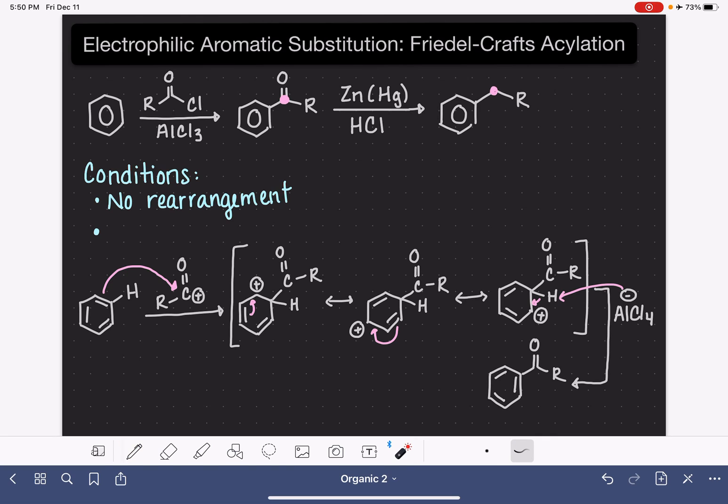So one of the issues with Friedel-Crafts alkylation is that once you get one alkyl group on the ring, it just tries to add more and more and more. This is a reaction that takes place only one time. So this is a monoacylation, one group only. We don't get multiple alkyl groups being added.